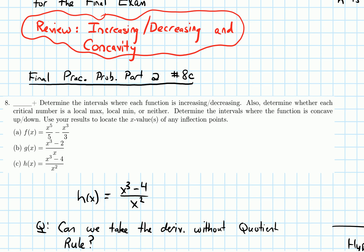I want to look at one of the final practice problems from part two — the second half of the class — specifically problem eight part c. We have this function h of x, and we need to figure out where this function is increasing and decreasing, determine whether each critical number is a local max, local min, or neither, and then determine the intervals where the function is concave up and down and find the x-values of any inflection points.